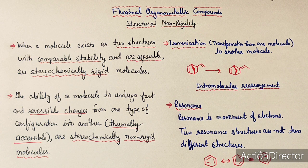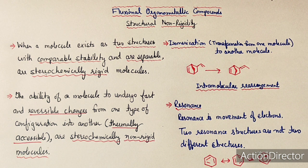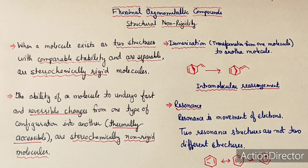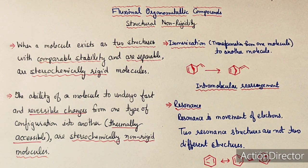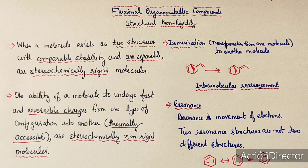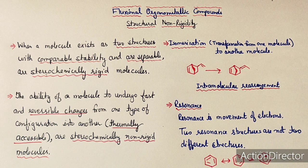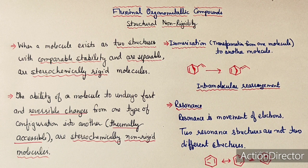Dynamic NMR is a very important tool to study fluxional behavior: at high temperature the exchange rate increases so resonance peaks collapse to a single peak, while at lower temperature the exchange slows and can be detected within the NMR timescale. The temperature range is typically +150°C to −150°C. In the next lecture, the fluxional behavior of allylic complexes will be discussed in detail.